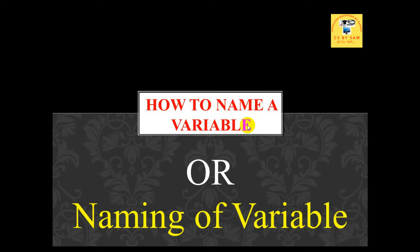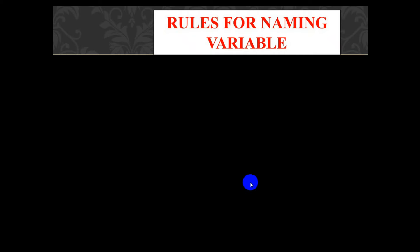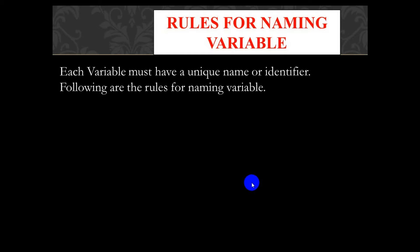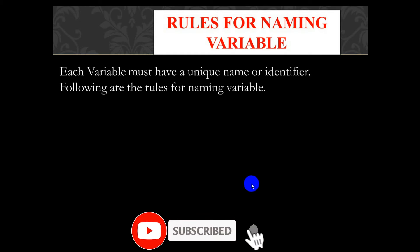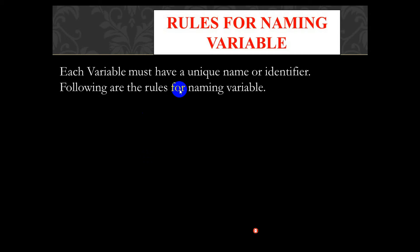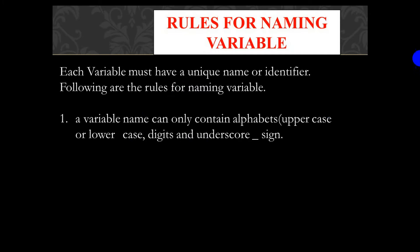Assalamu alaikum, we are here. Today's topic is: how to name a variable — the rules for naming a variable. Each variable must have a unique name or identifier, meaning every variable must have a unique name or identifier.